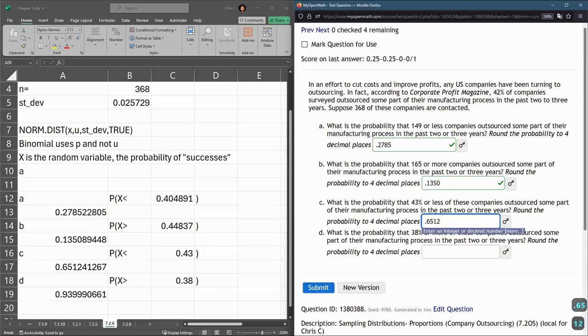So those two values go here. 0.6512, 0.9399. Probably should round that up. That one is annoying. 0.9400. There we go.